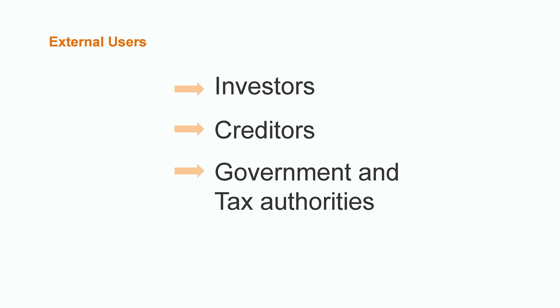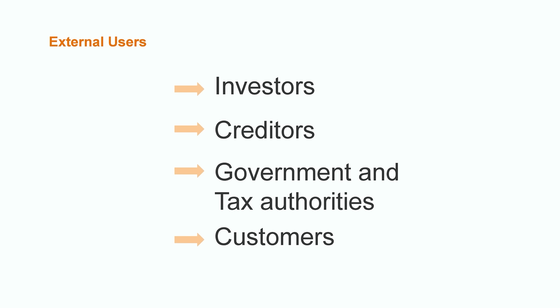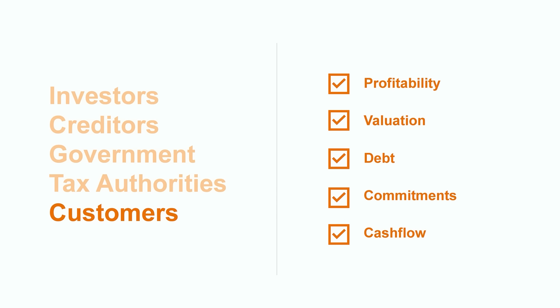Another very important external user is government regulatory agencies. Many businesses face government regulation and are required to report information about their operations and financials to these agencies. And don't forget, the government also uses the company's financial information to make sure they're paying enough taxes. Last up on our list is customers. Have you ever made the decision to buy a product or service based on what you know about a company's reputation or how much they charge for their products? If a company's stock prices were dropping or they were facing bankruptcy issues, it would likely impact your decision.